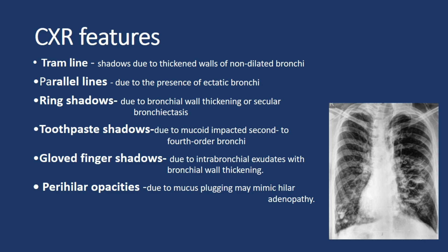Chest X-ray features of ABPA include: tramline shadows — thickened walls of non-dilated bronchi appearing as parallel lines; parallel lines indicative of ectatic bronchi; ring shadows signifying bronchial wall thickening or saccular bronchiectasis; toothpaste shadows caused by mucoid-impacted second to fourth order bronchi resembling squeezed toothpaste tubes; gloved finger shadows from intrabronchial exudates with bronchial wall thickening; and perihilar opacities mimicking hilar adenopathy due to mucus plugging.